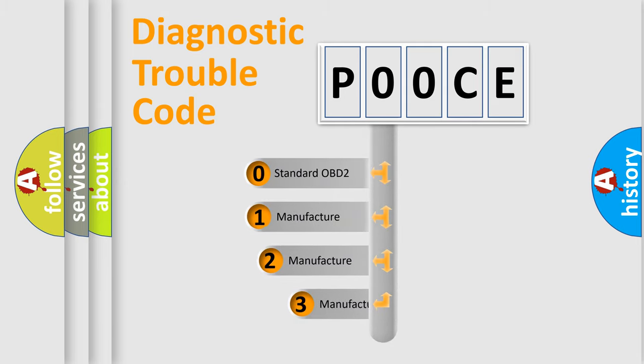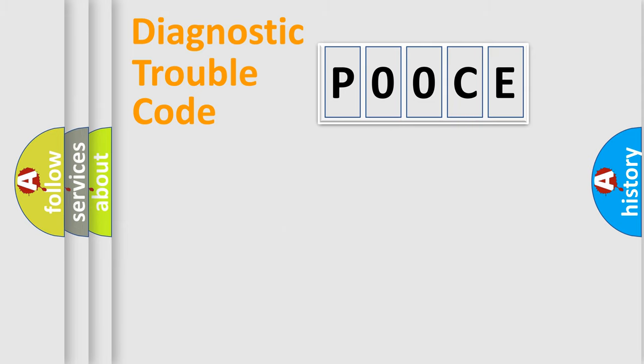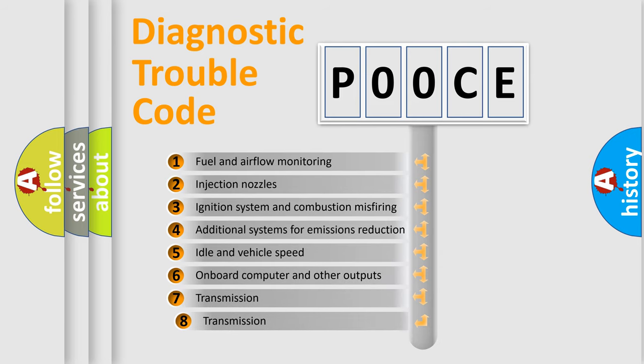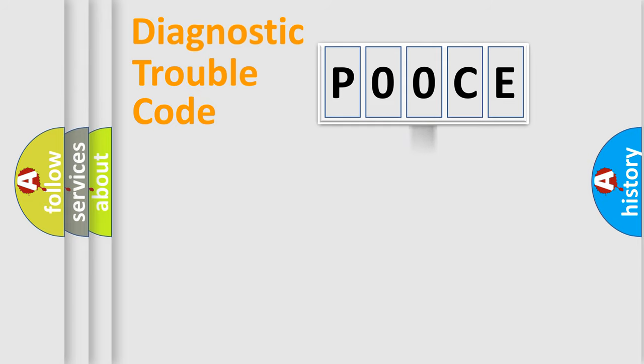If the second character is expressed as zero, it is a standardized error. In the case of numbers one, two, or three, it is a manufacturer-specific expression of the car's error. The third character specifies a subset of errors. The distribution shown is valid only for the standardized DTC code.